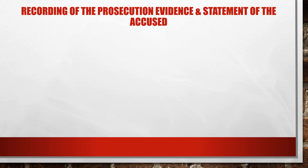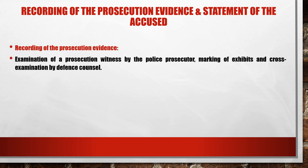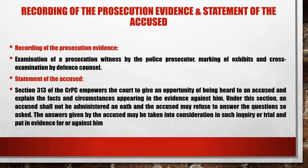The next stage is recording of the prosecution evidence and then the statement of the accused. Recording of prosecution evidence involves examination of the prosecution witness by the public prosecutor, marking of exhibits, and cross-examination by defense counsel. Then, Section 313 of CrPC empowers the court to give an opportunity of being heard to the accused and to explain the facts and circumstances appearing in evidence against him. Under this section, the accused shall not be administered an oath, and may refuse to answer questions. The answers given by the accused may be taken into consideration and put in evidence for or against him.